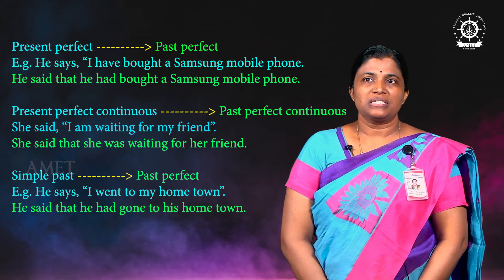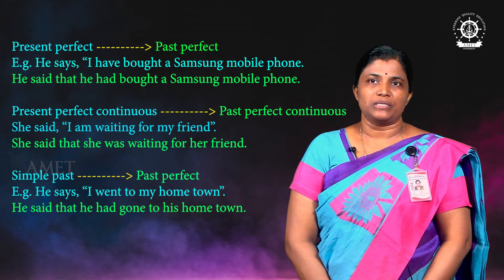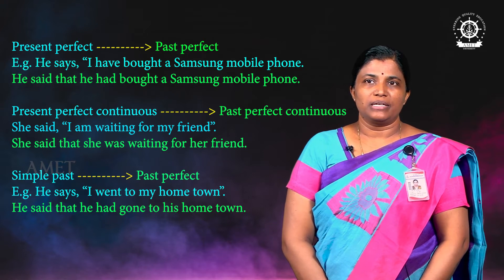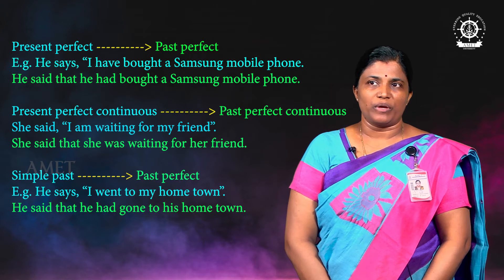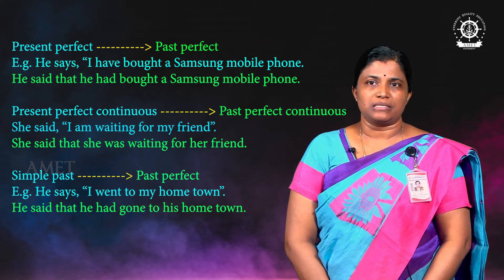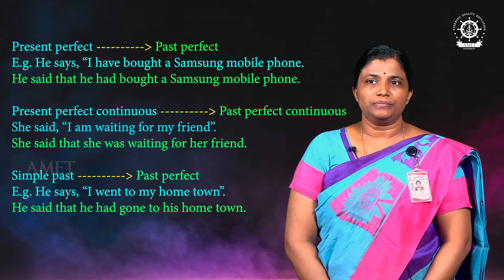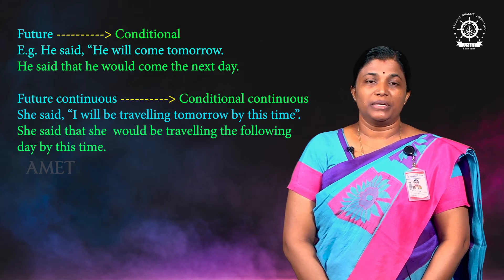Present perfect continuous becomes past perfect continuous. Next, simple past becomes past perfect. For example: 'He says I went to my hometown' — 'I went' is simple past — should be converted into 'He said that he had gone to his hometown.'